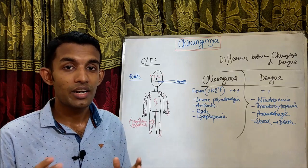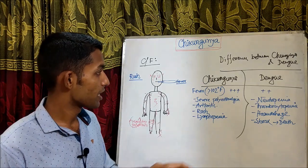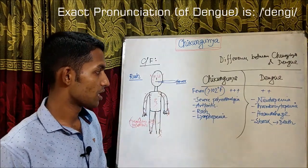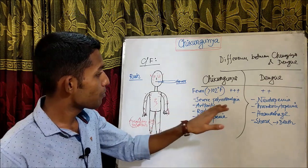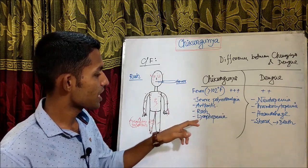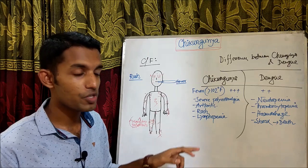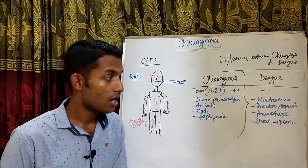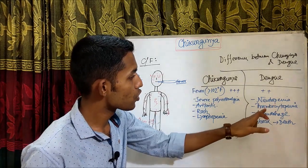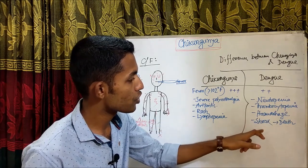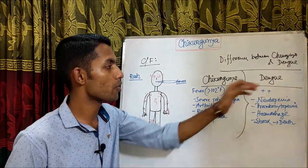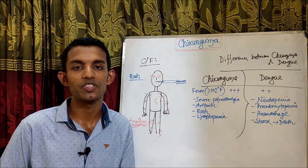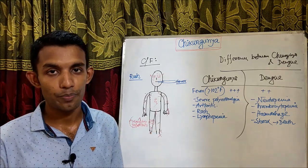Comparing Chikungunya and Dengue: fever more than 102 degrees Fahrenheit is 3+ in Chikungunya versus 2+ in Dengue. Severe polyarthralgia, arthritis, rash, and lymphopenia are more prominent in Chikungunya. Neutropenia, thrombocytopenia, hemorrhage, shock, and death are more prominent in Dengue.